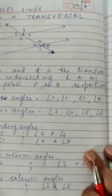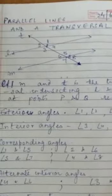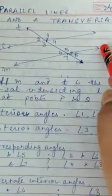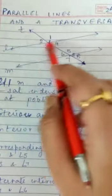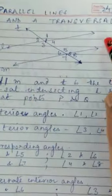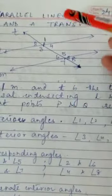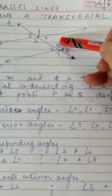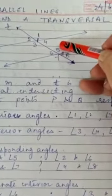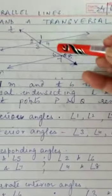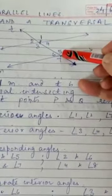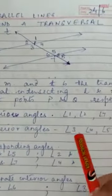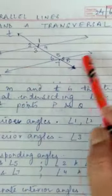Corresponding Angles Axiom: If a transversal intersects two parallel lines, then the corresponding angles are equal — for example, angle 1 is equal to angle 5. The converse, Axiom 6.4, states: if corresponding angles are equal, then the lines are parallel.